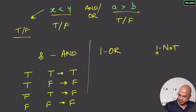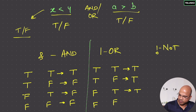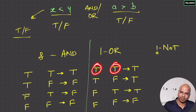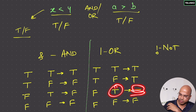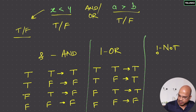For the OR operation: if both are true, you get true. If the first is true and the second is false, you get true. If the first is false and the second is true, you still get true. Only if both are false do you get false. So with OR, if any one of them is true, the output is true. Comparing AND and OR: AND requires both true, while OR only needs one true.